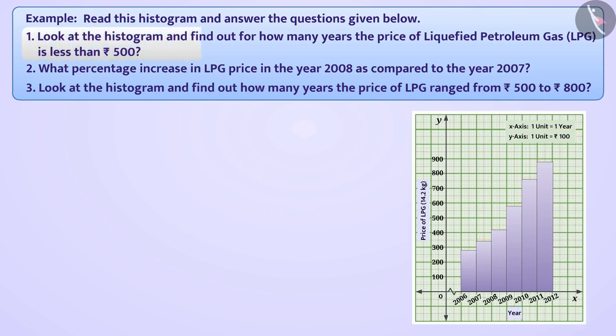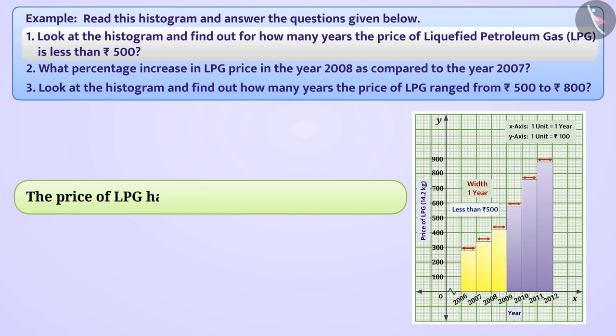Look at the histogram and find out for how many years the price of liquefied petroleum gas, i.e. LPG, is less than 500 rupees. Here, we see that price of liquefied petroleum gas is less than 500 rupees in the year intervals 2006 to 2007, 2007 to 2008, 2008 to 2009. Here, the width of each class is one year. Therefore, we can say that the price of LPG has been less than 500 rupees for 3 years.